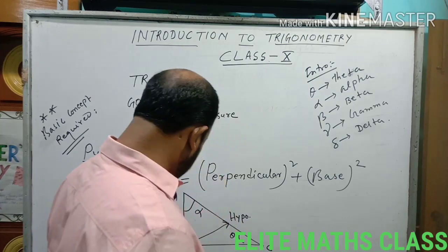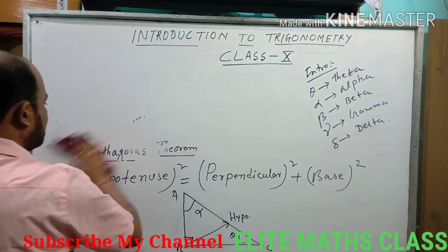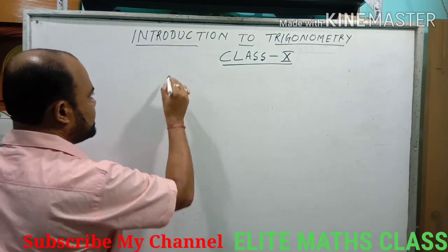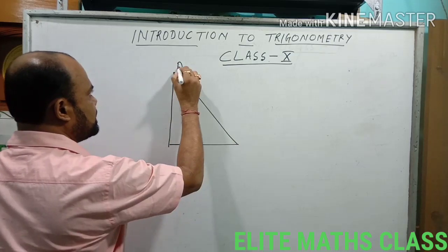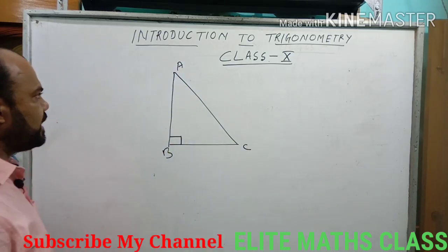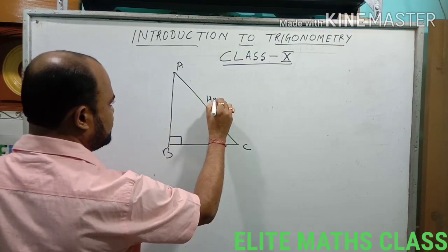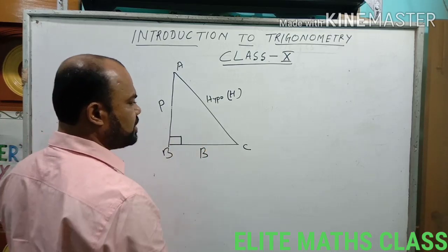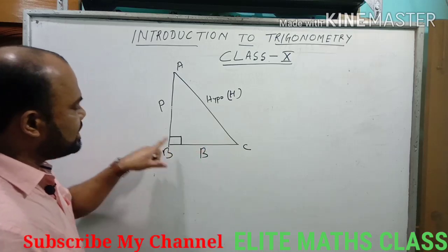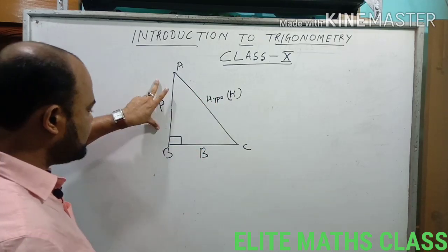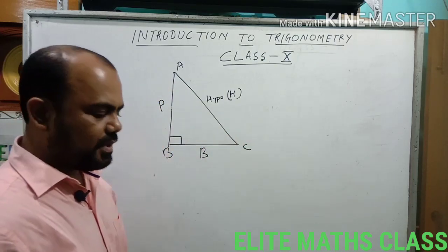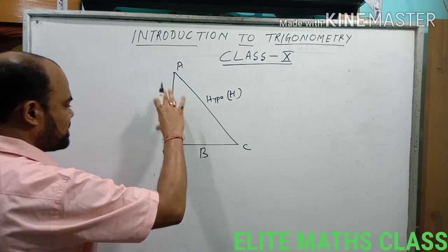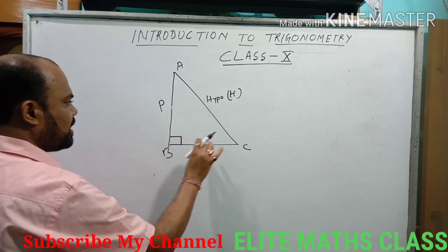Now let's see the main concept and main introduction of trigonometry in a triangle. Consider this triangle — clearly it is a right angle triangle and angle B is the right angle. This one is the Hypotenuse (H), this is the Perpendicular (P), and this is the Base (B). If you measure these sides — say this side is 5 cm, this is 3 cm, and this is 5 cm — then you can take the ratios of these sides.